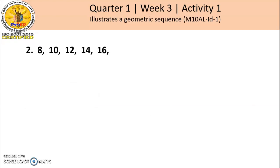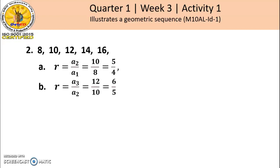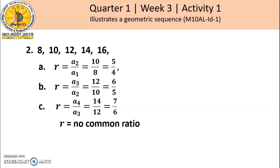Number 2: the sequence 8, 10, 12, 14, 16. To find the common ratio: A sub 2 divided by A sub 1 is 10 divided by 8, or 5/4. A sub 3 divided by A sub 2 is 12 divided by 10, or 6/5. A sub 4 divided by A sub 3 is 14 divided by 12, or 7/6. So it has no common ratio, and it is not a geometric sequence.